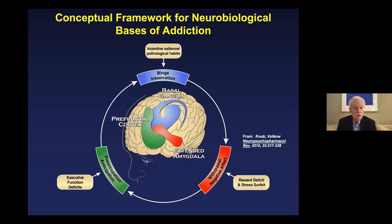The first stage is binge intoxication, where you become intoxicated with alcohol, illustrated on this slide in blue. That stage involves the domains of incentive salience and pathological habits, which derive from the pleasurable effects of alcohol. When you are drinking, the stimuli you associate with drinking take on rewarding properties and become motivating — like seeing the bar where you usually go after work.